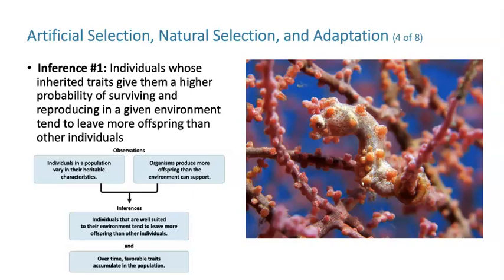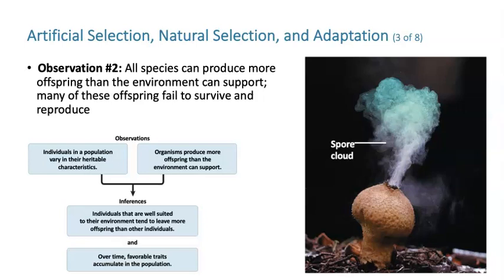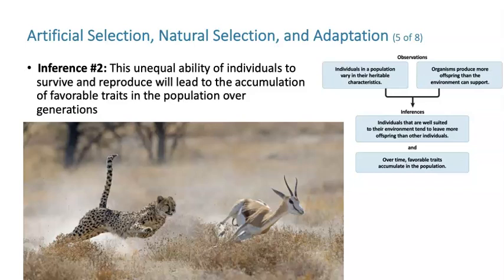This only works if there are more offspring produced than can be supported by the environment. Inference two: this unequal ability of individuals to survive and reproduce leads to the accumulation of favorable traits in the population, generation after generation after generation.